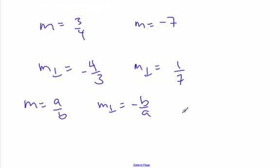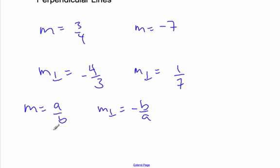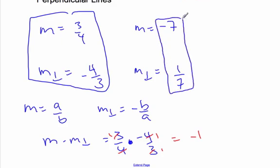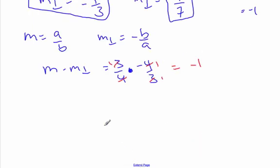Right. Now, one of the things we can also do is we can use the idea of these being reciprocals to show this one other thing. So, if I take this example here. If I take m times the perpendicular one, which is 3 quarters times negative 4 over 3. If I multiply those, well, the 4s cancel and the 3s cancel. And I'm left with 1 times negative 1 is negative 1. 1 times 1 is 1. I get negative 1. If I do it with the other pair, negative 7 and 1 seventh, negative 7 times 1 seventh, again, I end up with negative 7 over 7, which is negative 1. There seems to be a pattern there.